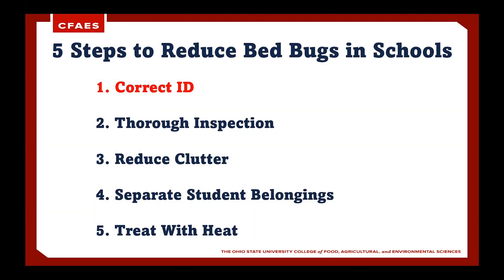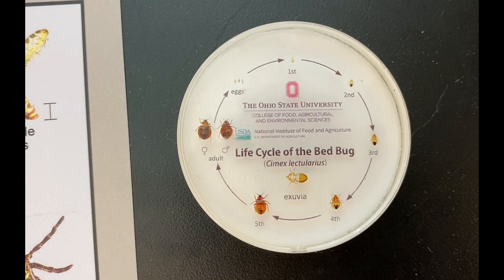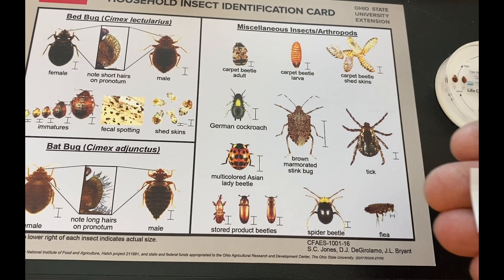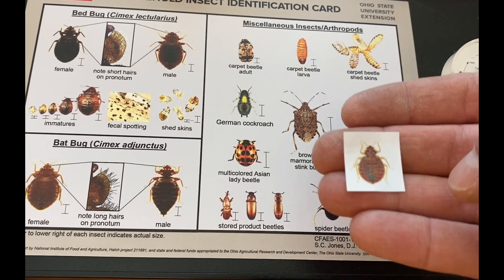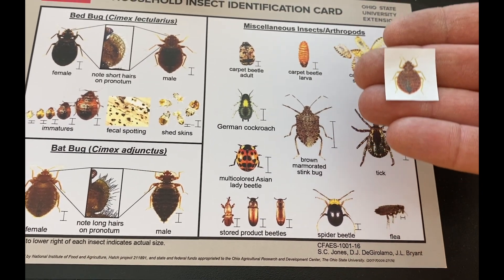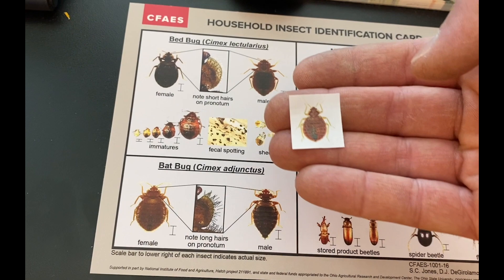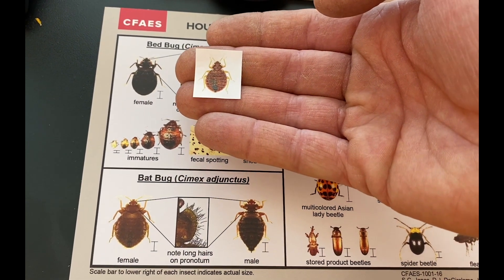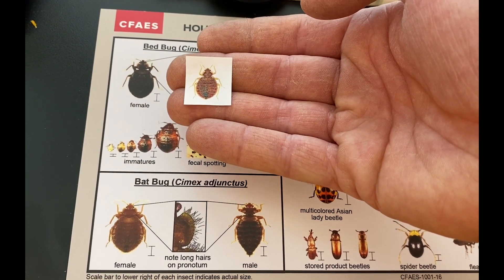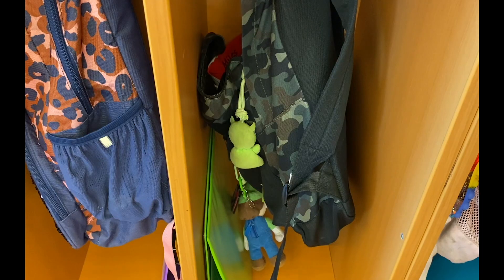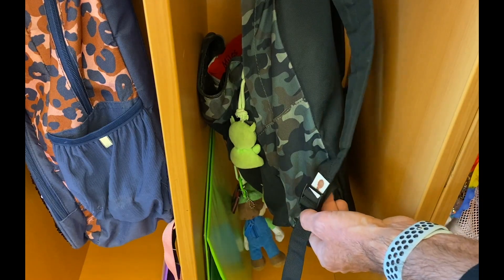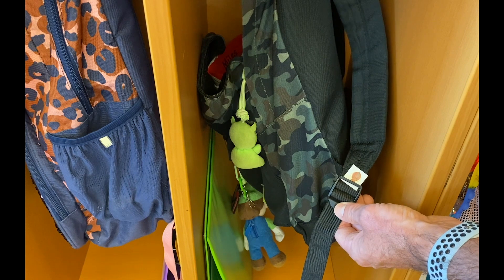The most important first step in dealing with a bedbug infestation is proper identification. There are several guides that can be used to help identify bedbugs of all life stages, including this card from The Ohio State University showing bedbugs and other household insect pests. Adult bedbugs are brown to reddish brown, oval shaped, flattened, and about five millimeters, or approximately the size of an apple seed. Their flat shape enables them to easily hide in cracks and crevices.